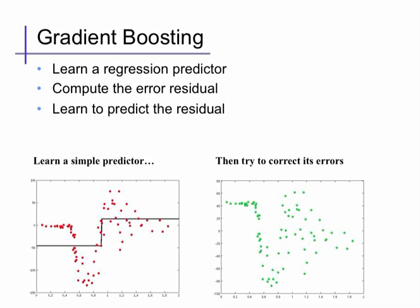We learn a simple regression predictor of our data. Then we compute the error residual, the amount of the error per data point in our predictions. And then we learn a new model to try to predict this error residual. So here's an example with red data on the left.